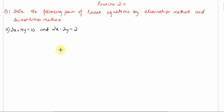I already solved the first question in the introduction video, so today we'll solve the remaining questions: 2, 3, and 4. We are asked to solve — meaning find the value of x and y. The question says to use both elimination and substitution method, but we're going to skip substitution since we've already covered it, and the exam doesn't typically ask both methods for one question.